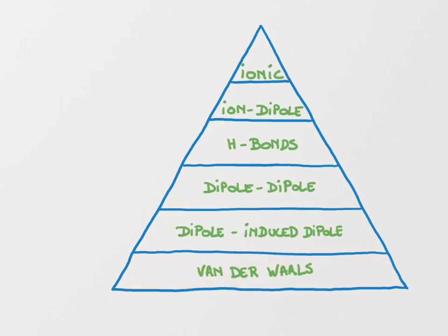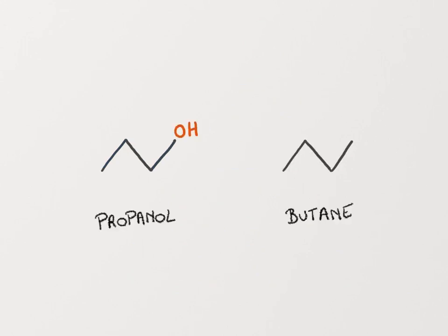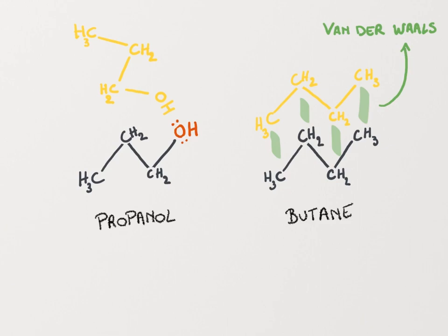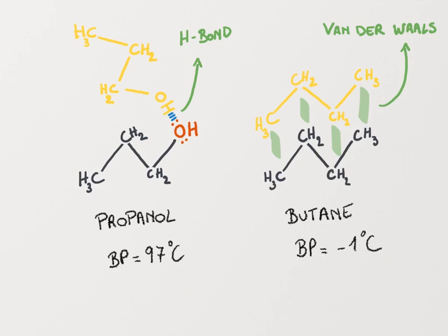To determine the strongest type of intermolecular interaction possible, you'll need to look at the functional groups present in each molecule. Let's consider propanol and butane. The butane can form van der Waals interactions, while the propanol can form hydrogen bonds, as it has both acceptor and donor groups. Van der Waals interactions are a lot weaker than hydrogen bonds, so the boiling point of propanol is higher than the boiling point of butane.